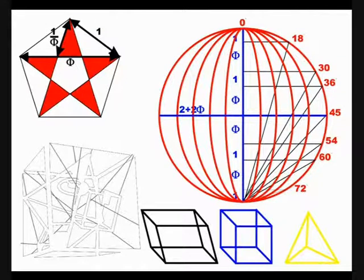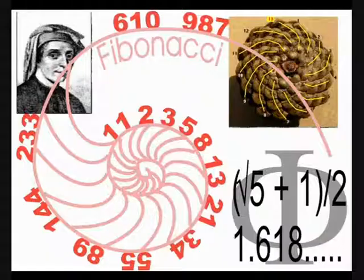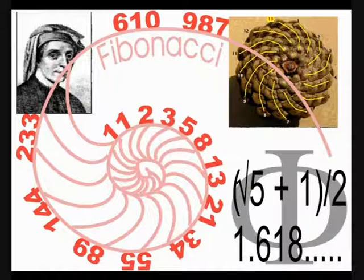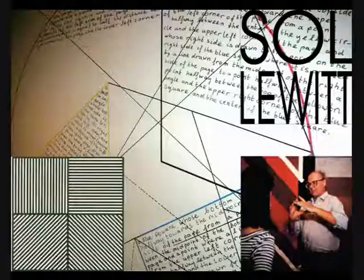With the Braintrotter cube I embroider on the strength of solid geometry, on the beauty of the golden section and the figures of Fibonacci, and on the magic of the art of Sol LeWitt.